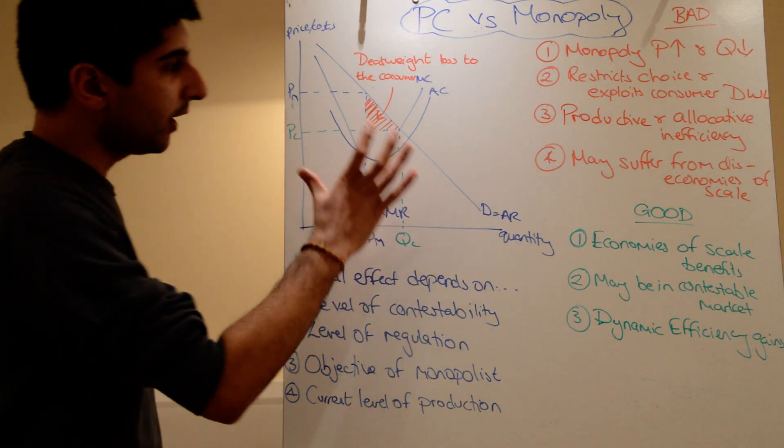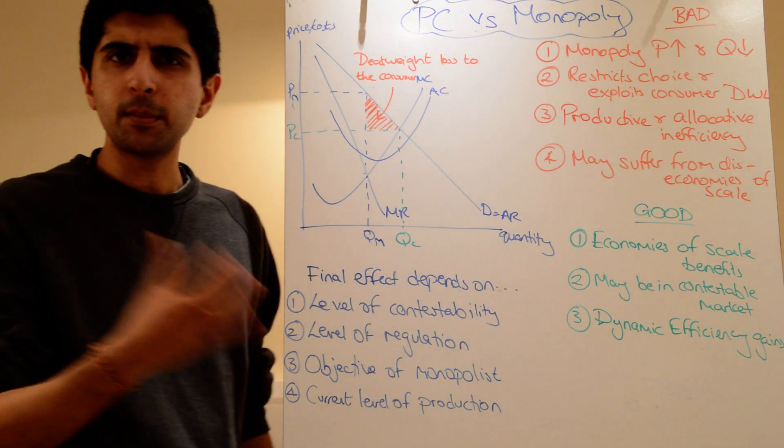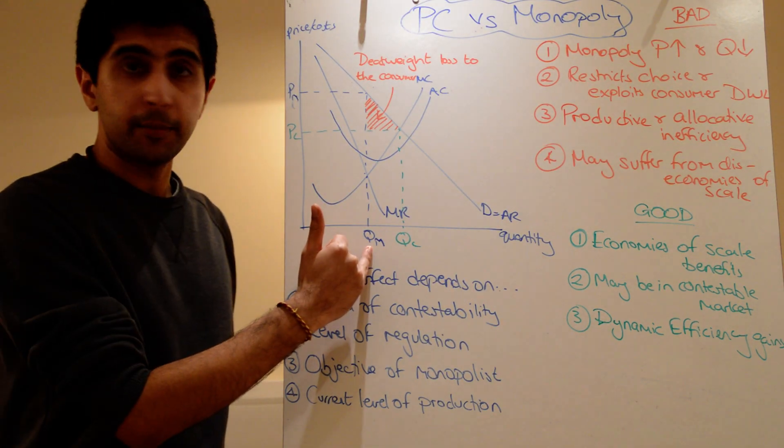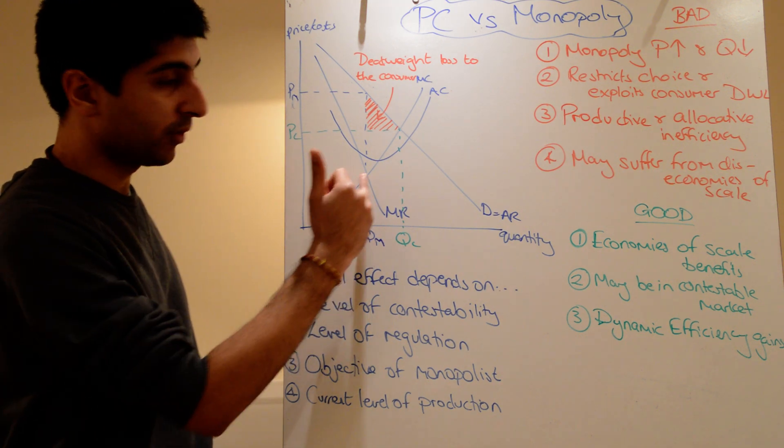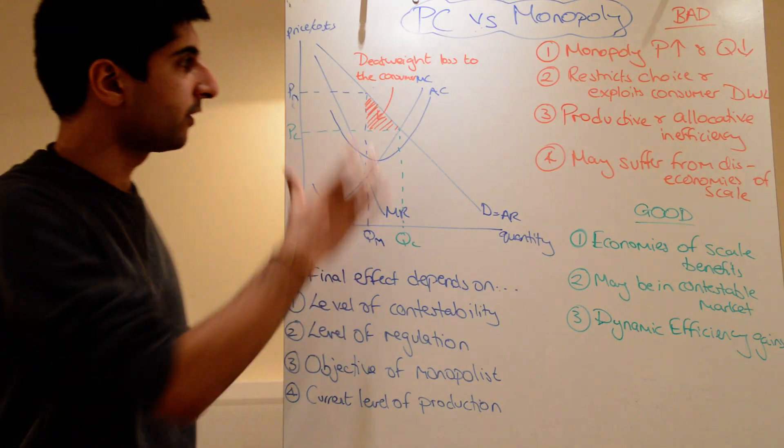The way to start is by looking at the diagram. Now, I've started off by just drawing a very simple monopoly diagram. You've got the quantity that monopolists would produce out there at the profit maximizing point, and you've got the price that the monopolist will set at PM.